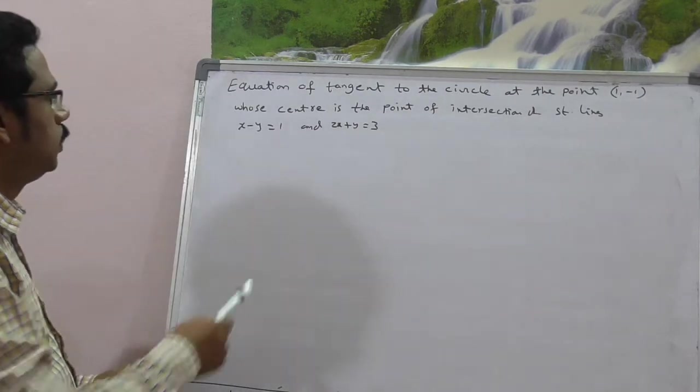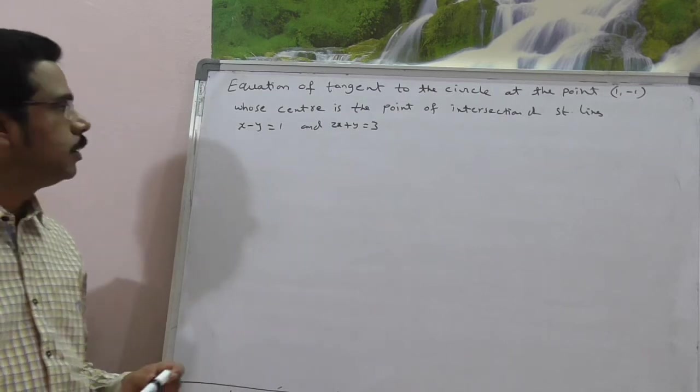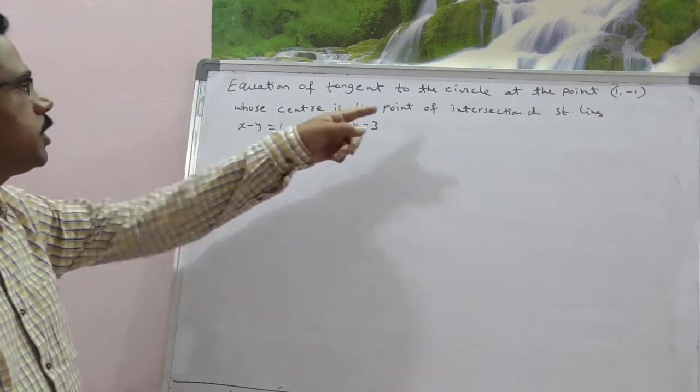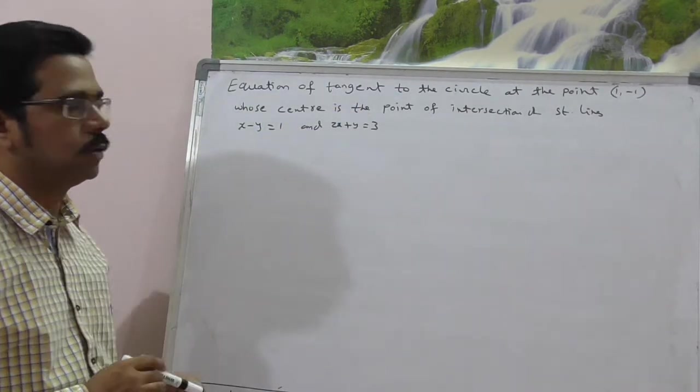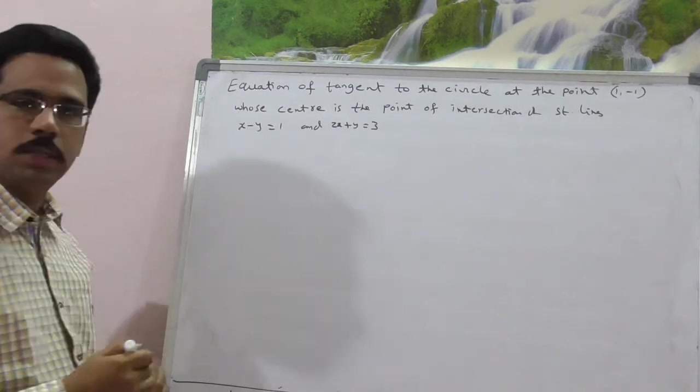Hi, this question is from JEE Main online exam which was conducted on April 10th, 2016. Equation of tangent to the circle at the point (1, -1), whose center is the point of intersection of the straight lines.